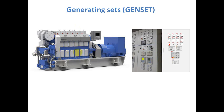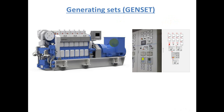An engine converts the chemical energy found in the fuel into mechanical energy. That mechanical energy is used to spin the alternator rotor, converting the mechanical energy into electrical energy used in the generator. An alternator is made of two main parts: a rotor and a stator.